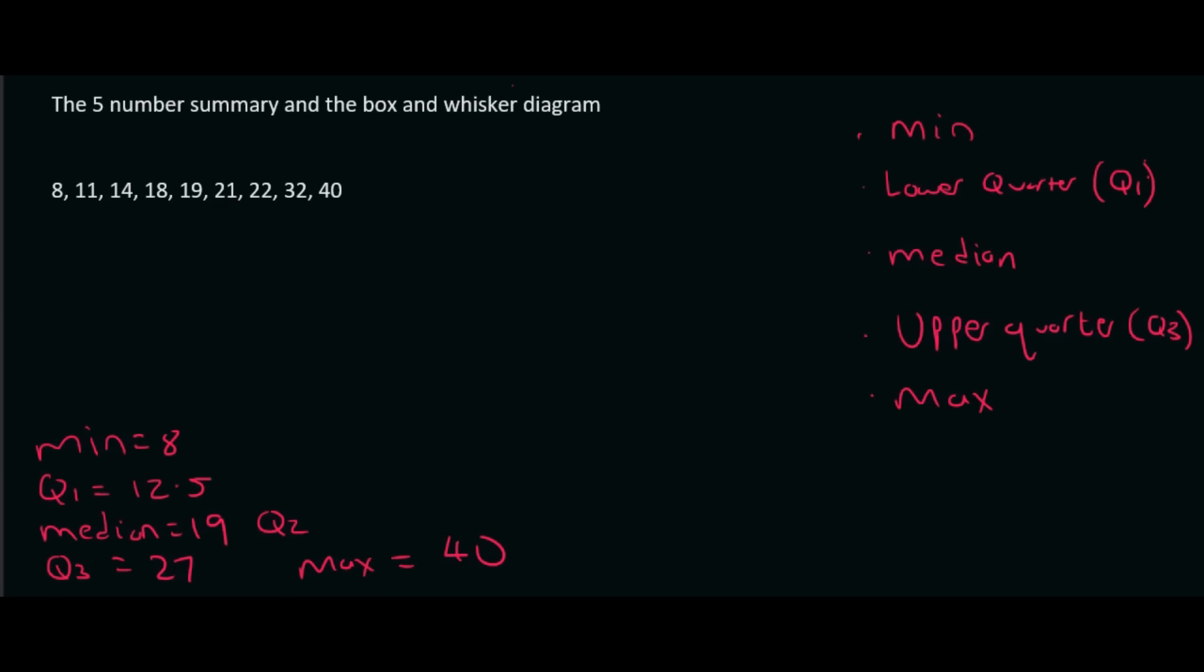And so if you are ever asked for the five number summary, well, that's it. Now we can use the five number summary, and we can draw something called a box and whisker diagram.